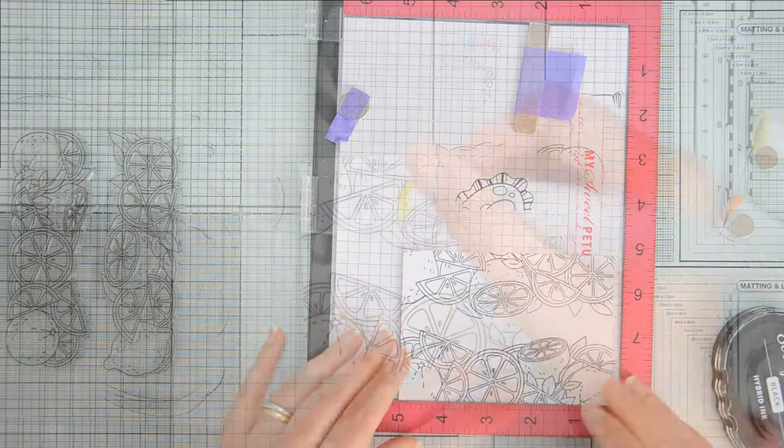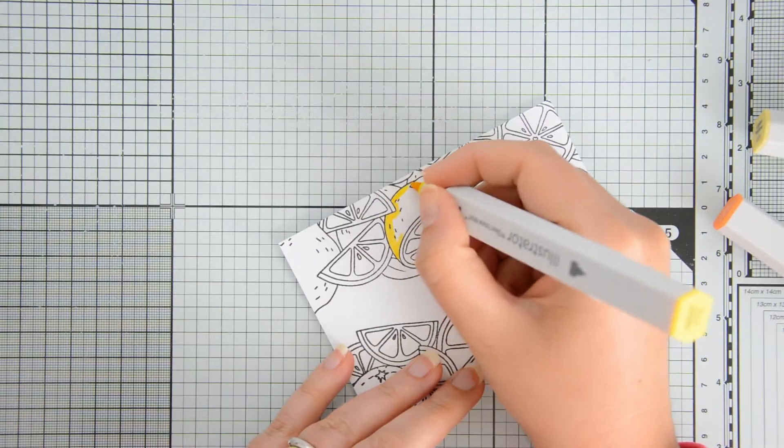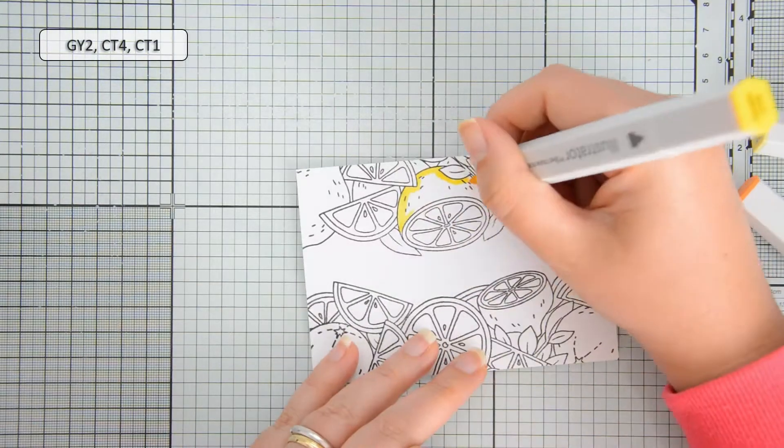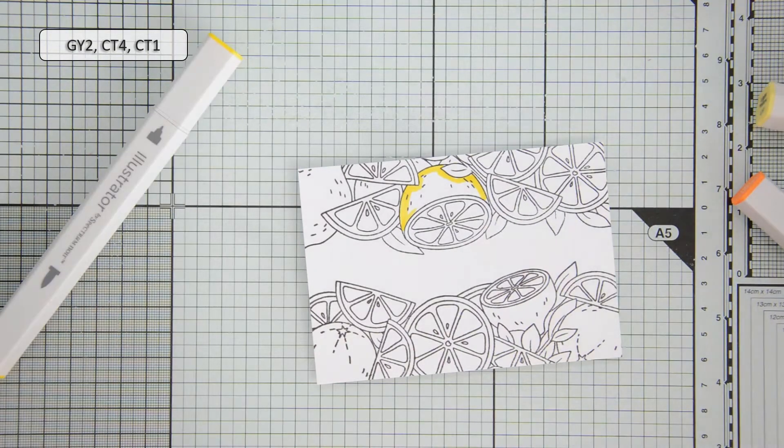The ink that I used is scrapbook.com premium hybrid black ink and today I'm going to do some coloring with my illustrator alcohol markers.